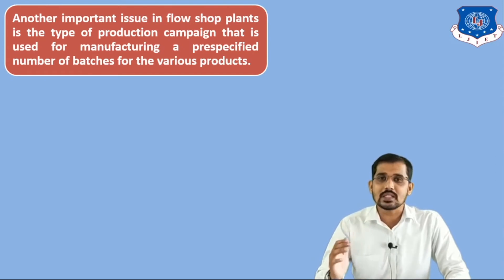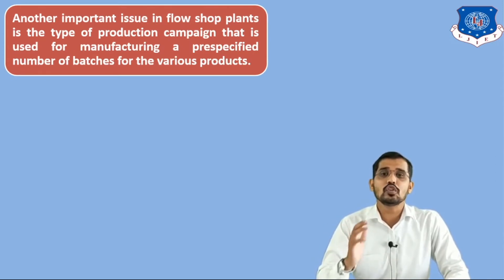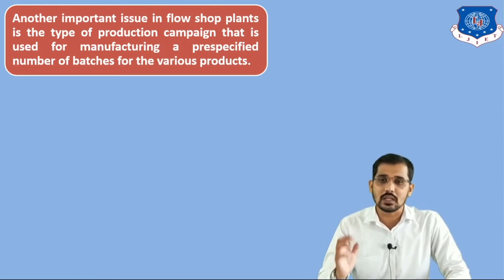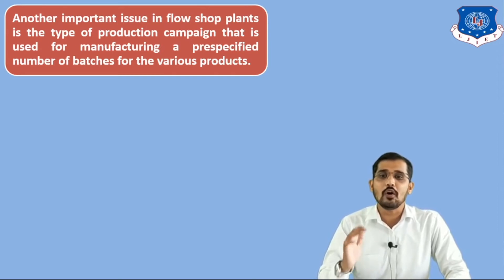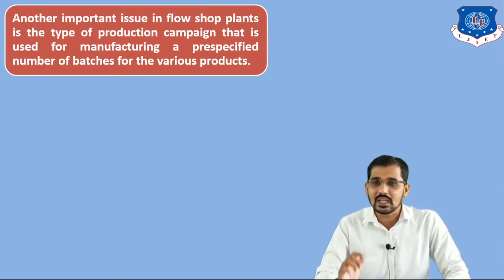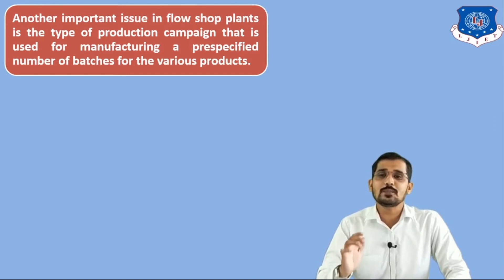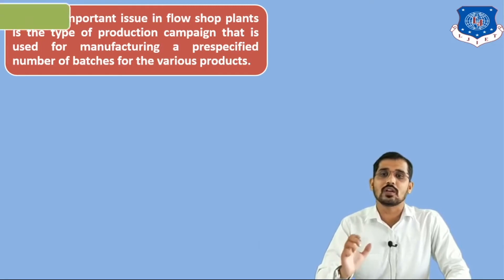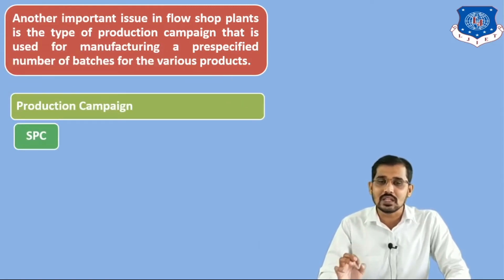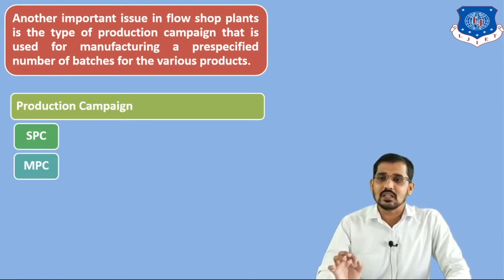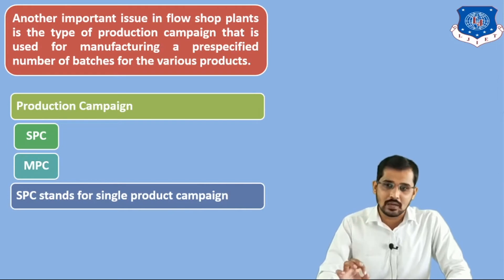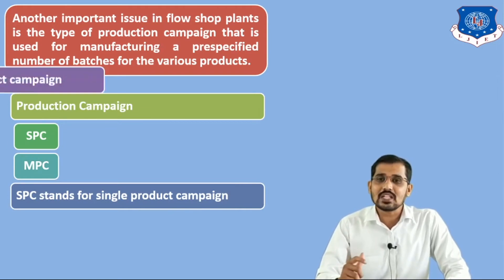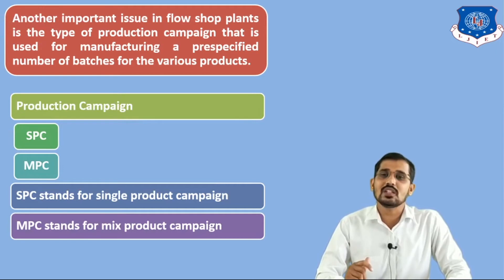Now we will see some important points related to the flow shop plant. The first point is: another important issue in flow shop plants is the type of production campaign that is used for manufacturing a pre-specified number of batches for various products. According to product campaign, there are two types: the first one is SPC and the second one is MPC. SPC stands for single product campaign and MPC stands for mixed product campaign.